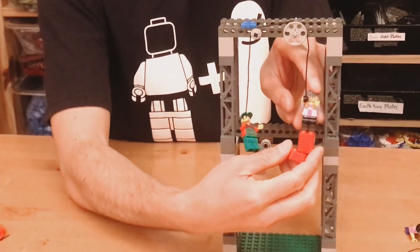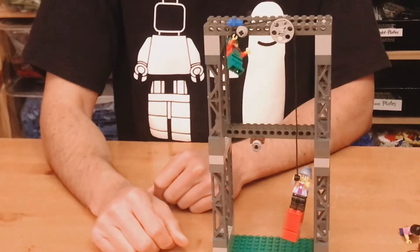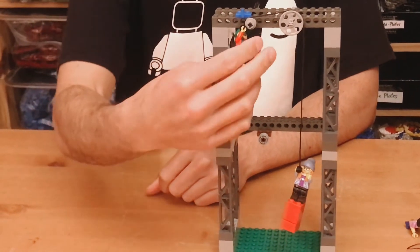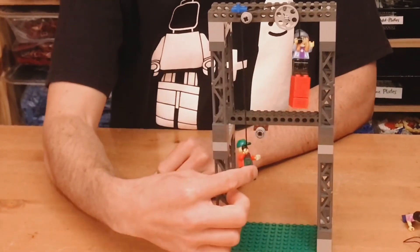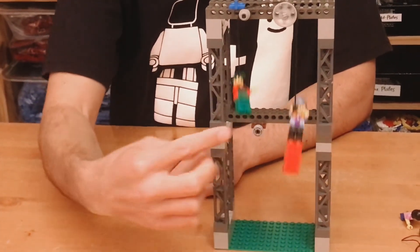But if I add a third Lego brick on here, we'll see that suddenly we do have enough weight to overcome the friction in the mechanism, and the heavier side of the load is going to fall down.